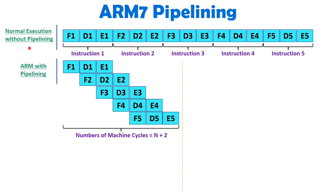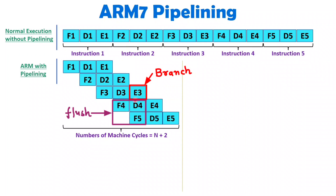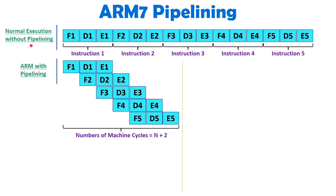But there are a few issues — like if a branch instruction is coming, at that time we need to discard the pipeline. For example, if you execute instruction 3 which is a branch, in that case you will have to discard the data which is there with fetch of 4, decode of 4, as well as fetch of 5. From there onwards you will have to fetch instruction 4 again. So those machine cycles that will get discarded during branch. But still it will be faster compared to a non-pipeline structure.